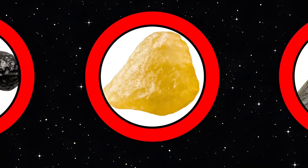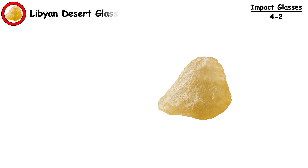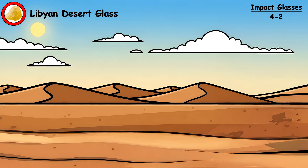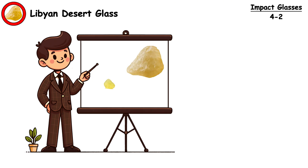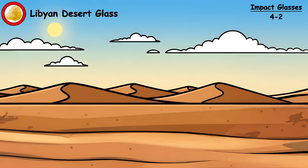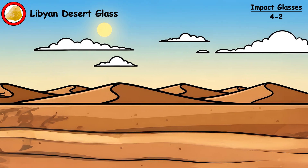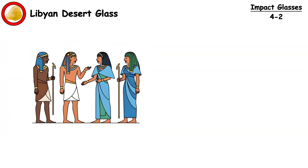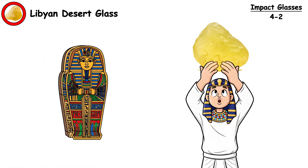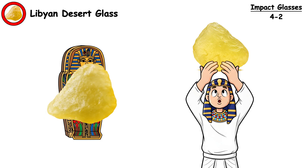Libyan Desert Glass. It is a mysterious yellow-green impact glass found scattered across the Egyptian-Libyan border region. This nearly pure silica glass formed about 29 million years ago, suggesting the desert sand was heated to extreme temperatures. Ancient Egyptians prized this material, and King Tutankhamun's burial included a scarab carved from Libyan Desert Glass.